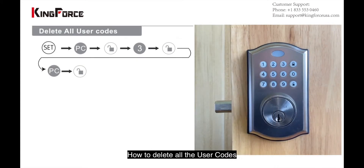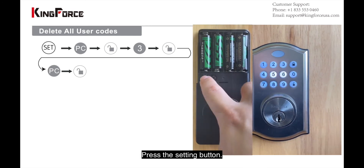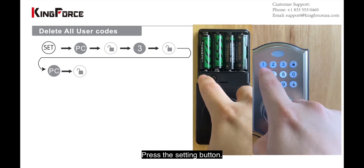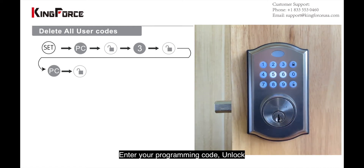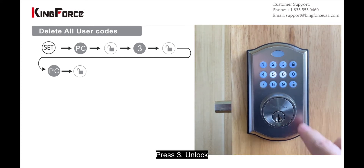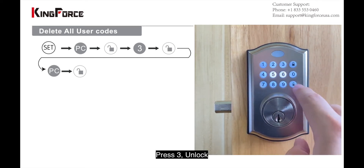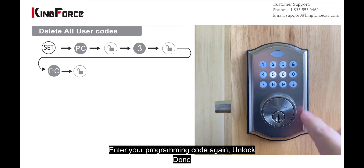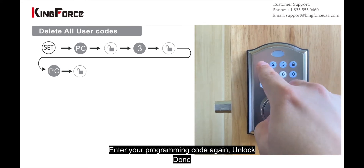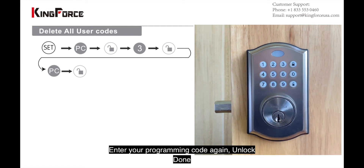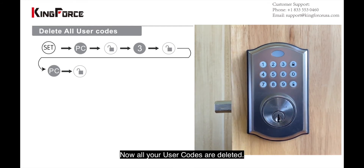Let me demonstrate how to delete all your user codes. Number one: press the setting button and enter your programming code, then unlock. Then push number three and unlock, then enter your programming code again and unlock. Done — now all your user codes are deleted.